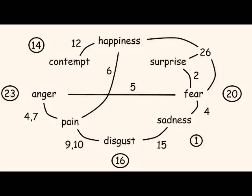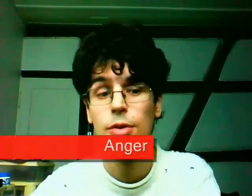Finally, anger has 4 and 7 in common with pain — lowering the eyebrows and tightening the lid. It has number 5, like in fear, when you open the lid to see everything you can see. And it has number 23, which is specific to anger — pressing the lips together. So anger shares 4 and 7 with pain, also has 5 like in fear for opening the lid, and also 23 for pressing the lips.